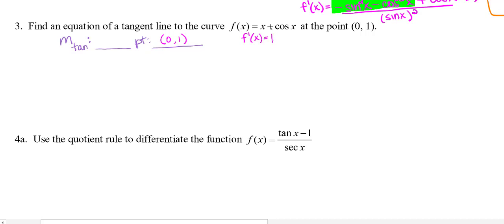So it would be 1. The derivative of cosine x would be negative, so I'll change that to minus sine x. The slope of the tangent line is specifically at this point (0, 1), when x equals 0. If I find f'(0), that's going to give me the slope of my tangent line at that point.